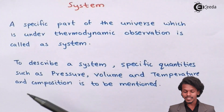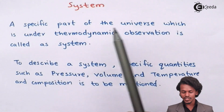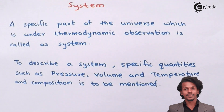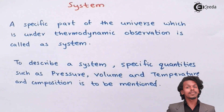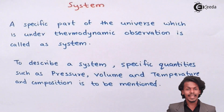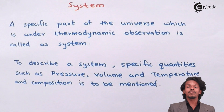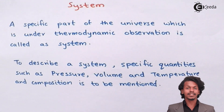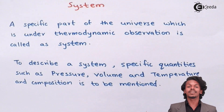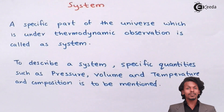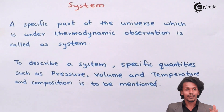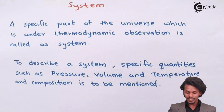Talking about the system — system is nothing but a specific part of the universe which is under thermodynamic observation, and that is known as the system. For example, if I am boiling water in a glass tank, then that boiling water would be my system. If I consider myself or the walls of the room, that would be considered as the surrounding.